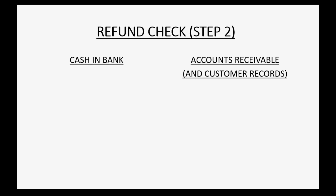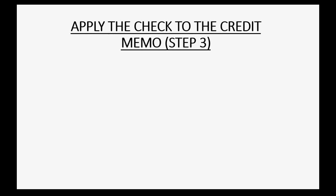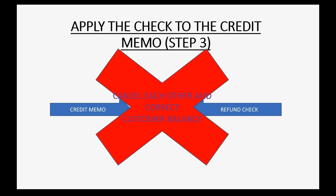Then for step two, when we write the refund check, cash goes down because we're writing a check, but accounts receivable actually goes up — because it would normally decrease when you get money from a customer, it increases when you're paying money to a customer. In step three, we simply apply the credit memo that decreased the customer's balance to the refund check that increased the customer's balance, and they cancel each other out so the customer's balance will be correct.